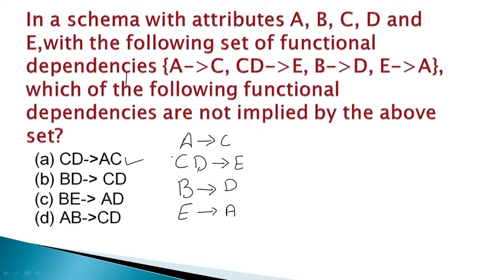For cd → ac: from cd, using cd → e, we get e. Then from e → a, we get a. So from cd we can find a. Also from c, we already have c. So cd → ac is derivable — this is correct, it is implied.